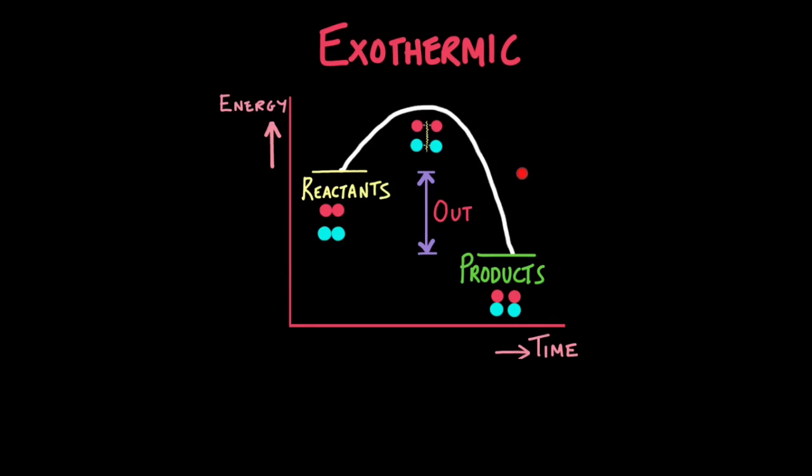If the product line was here with the same level of energy as reactants, we would feel no heat. The reaction wouldn't feel cold or hot because as much heat is put into the system as is leaving. But in exothermic reactions, far more leaves than is required to start the chemical reaction. This represents the difference.